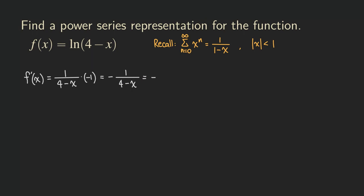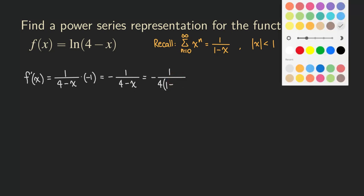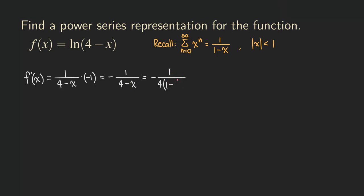If we factor the four out of the denominator, we get four times one minus x over four. So four times one is four, and four times negative x over four is negative x — that checks out.